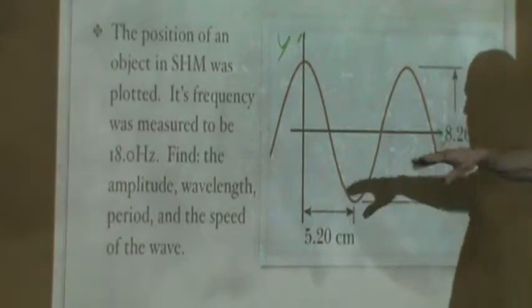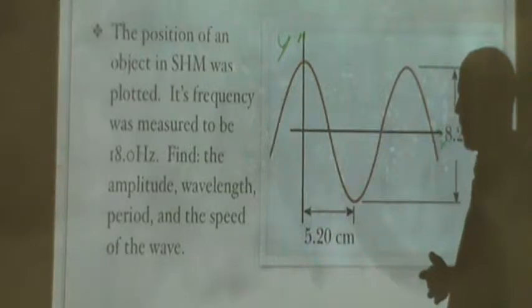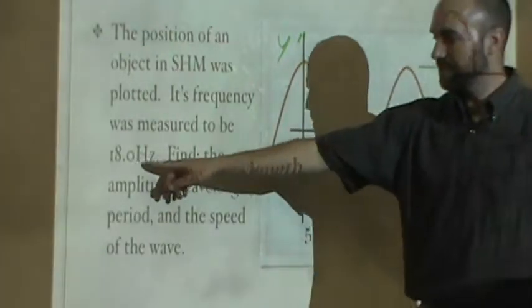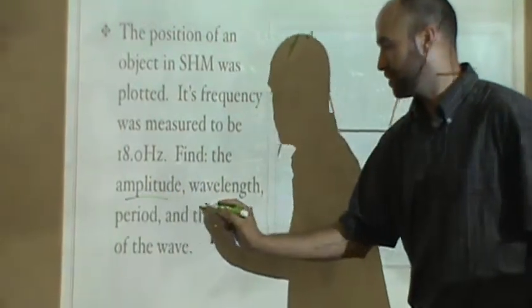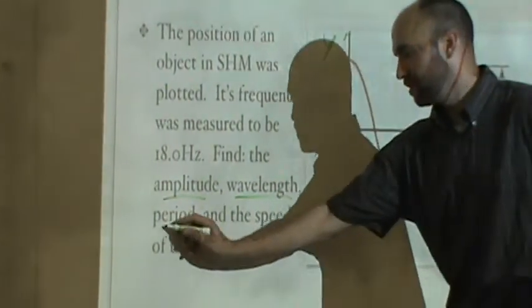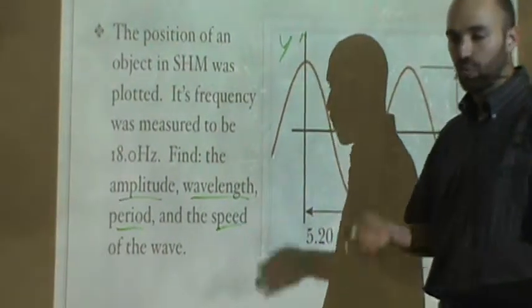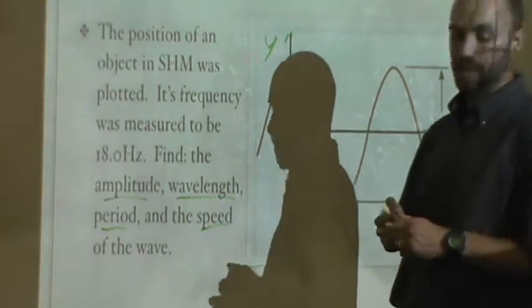And now, so when you're looking at these graphs, you've got to be sure to look at the axes. What are they labeled as? So now, it tells you this is plotted out as the wave travels down the spring. We've plotted out where it is when. And the question is, its frequency is this. Find: one, the amplitude; two, the wavelength; three, the period; and the speed of the wave as it travels down this string or spring.